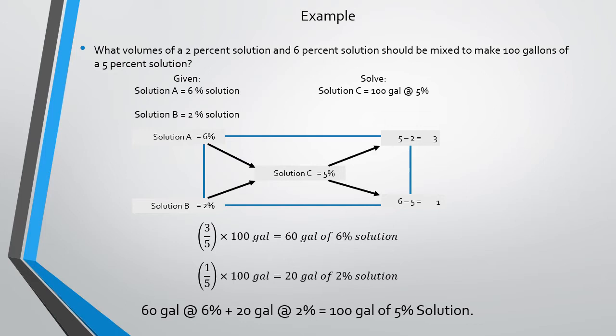Then you take the 1% calculated divided by the 5% solution times 100 gallons, and you get 20 gallons of the 2% solution. So to make 100 gallons of the 5% solution, you will need 60 gallons of 6% solution and 20 gallons of 2% solution for every 100 gallons.